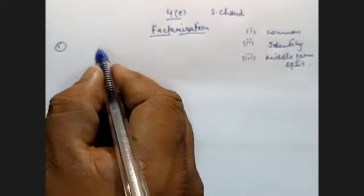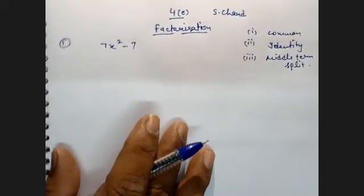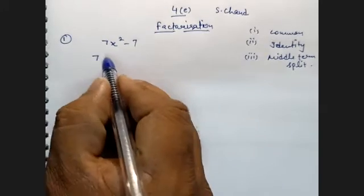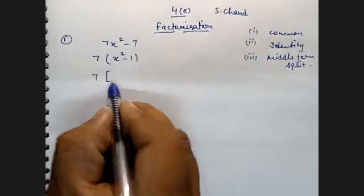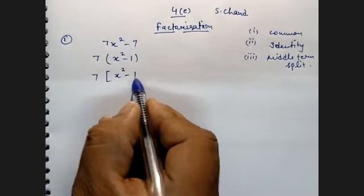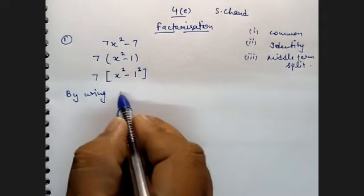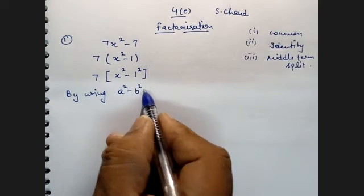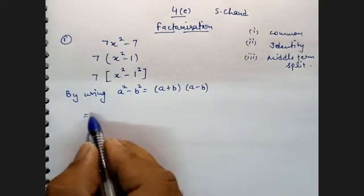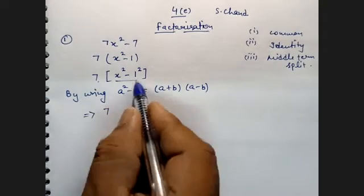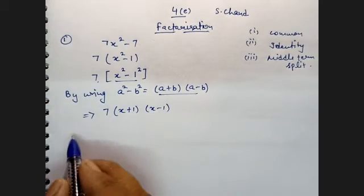First sum: 7X squared minus 7. How many terms are there? There are two terms. What is common? 7 is common. What is left? X squared minus 1. Now, 1 can be written as 1 squared. By using the identity A squared minus B squared equals A plus B into A minus B, this can be written as 7 into X plus 1 into X minus 1. This is the answer.